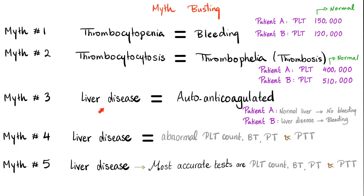Myth number three: if a patient has liver disease, that patient is automatically anticoagulated. So patient A with normal liver has no bleeding risk, but patient B with liver disease is absolutely anticoagulated. That's a bunch of bilge water. If I have liver disease, I could be suffering from bleeding, thrombosis, neither, or even both — a condition very similar to DIC.